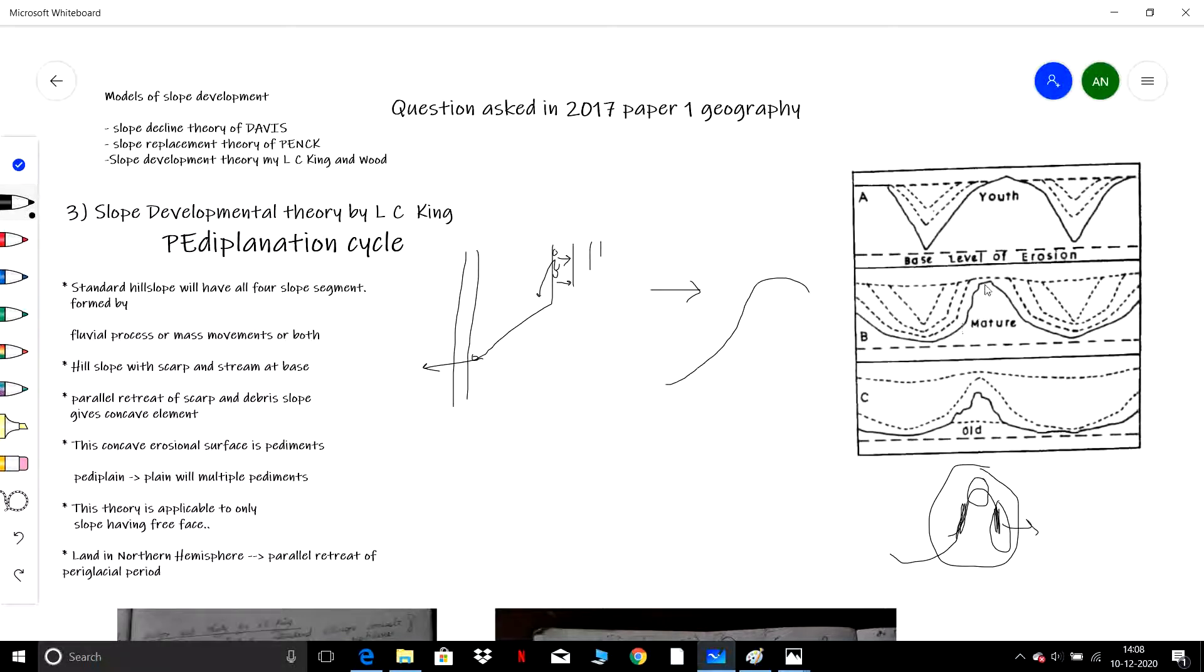It will be developed into a concave segment. Let me show you—this is the initial scarp, that is the free face. Over a period of time, due to parallel retreat, it will be converted. This is the debris slope. Now the concave segment will be developed.